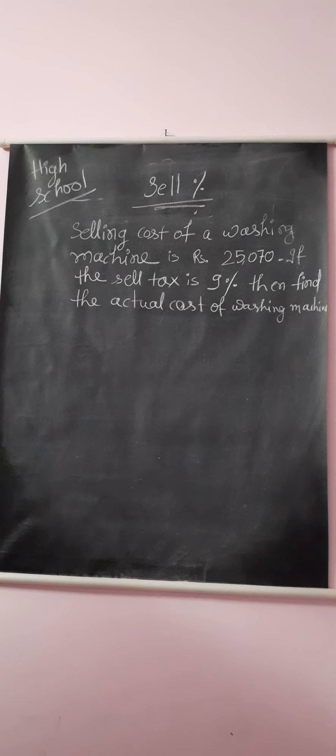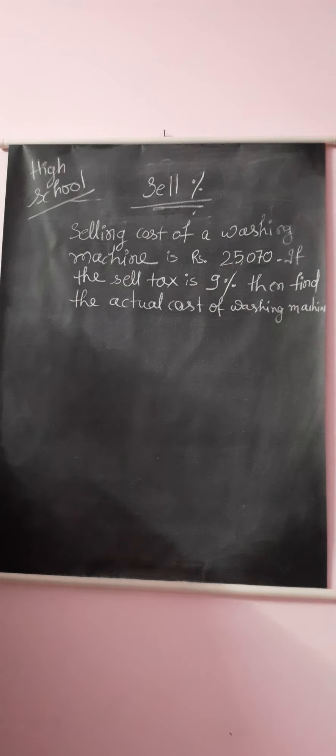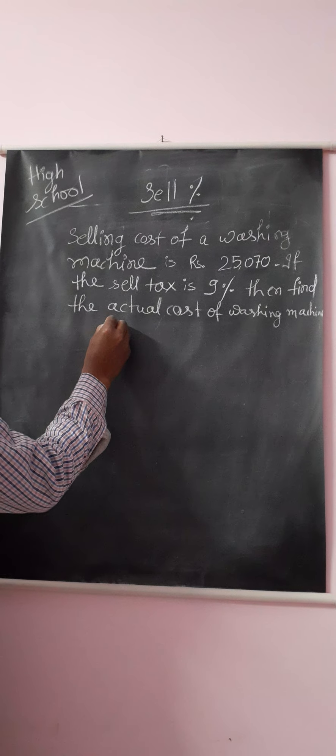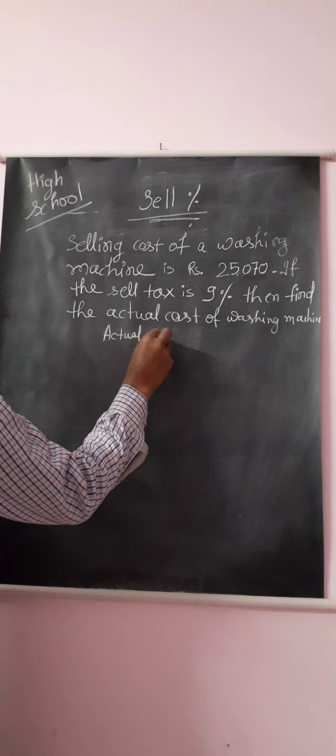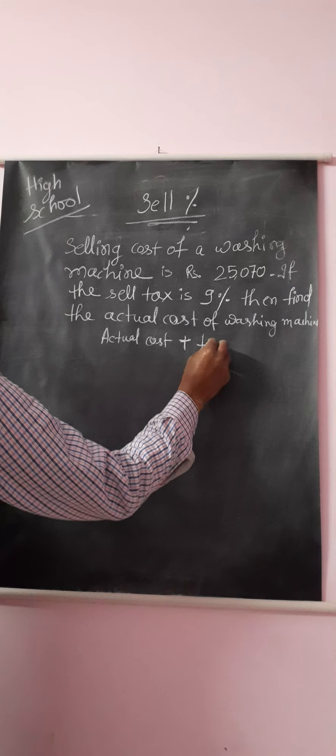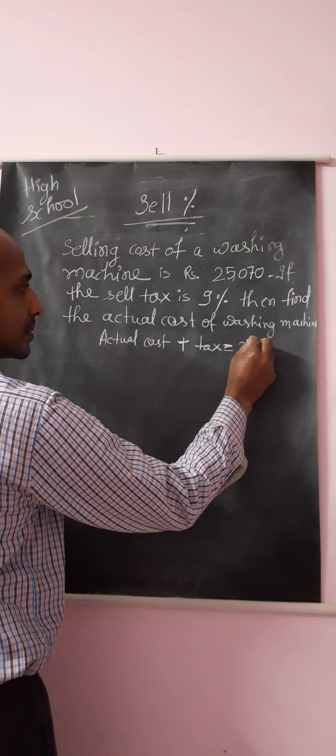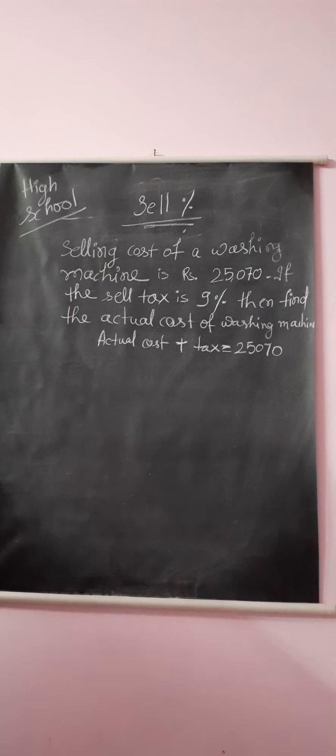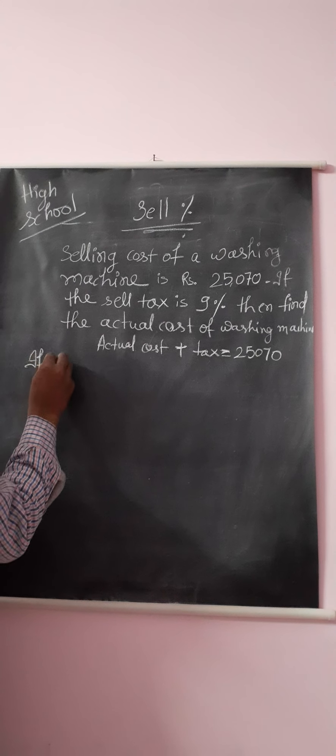Now this 25,070 is including tax, which means actual cost plus tax equals 25,070. So suppose the actual cost is x.